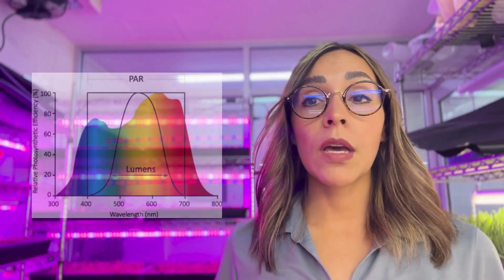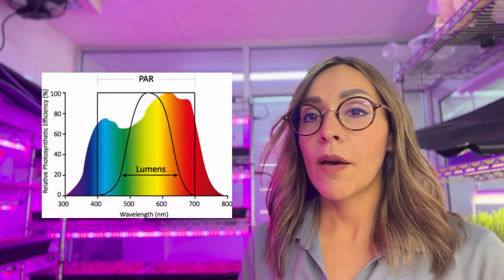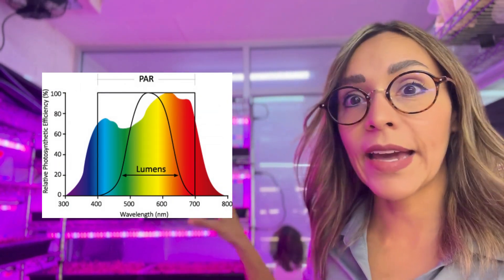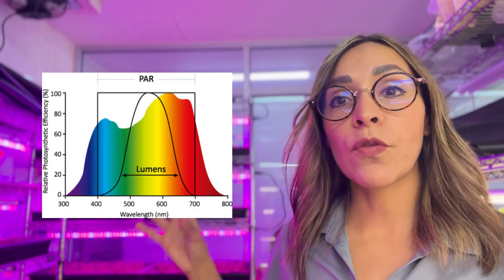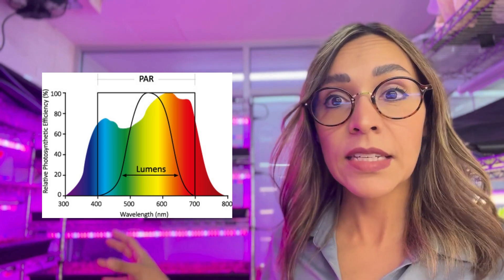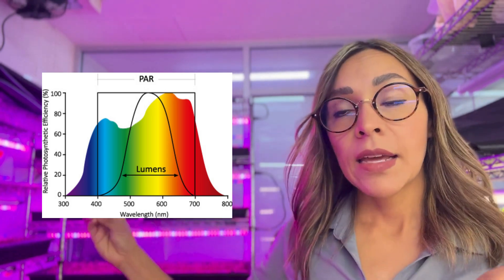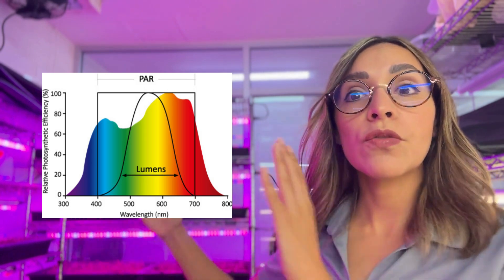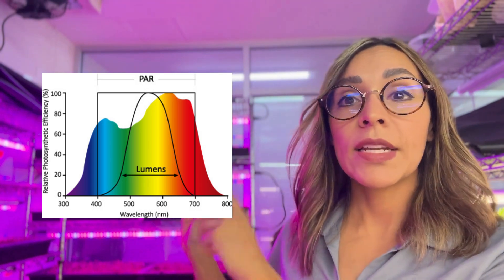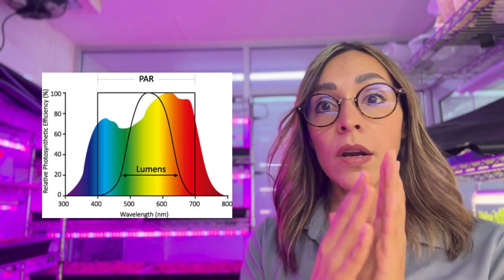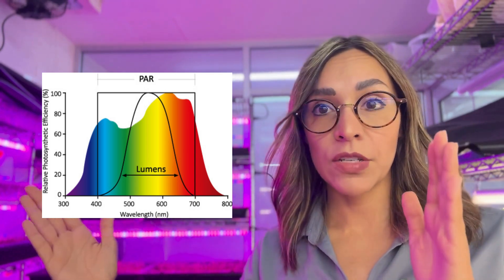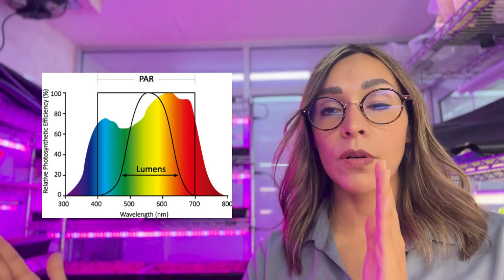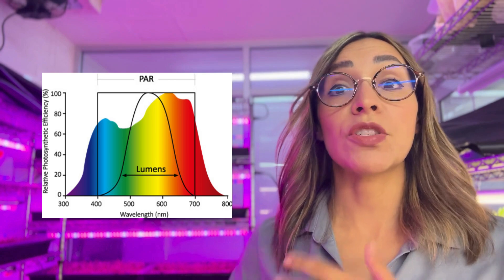So let's start speaking about PPFD, which is the ideal unit to measure light in plants. PPFD stands for photosynthetic photon flux density, and that is the amount of light in the section of the spectrum that is useful for photosynthesis in plants. We call this section PAR — the photosynthetically active radiation. All the photons of light that are between 400 and 700 nanometers are measured when we measure PPFD.